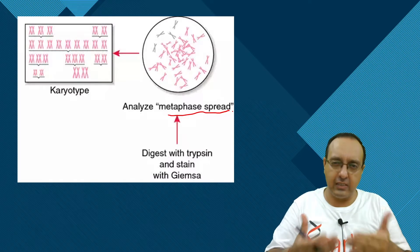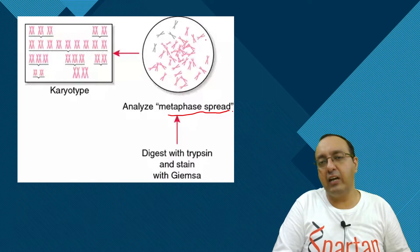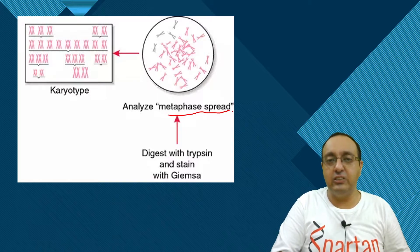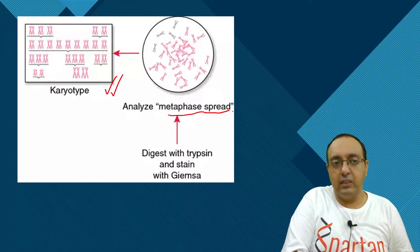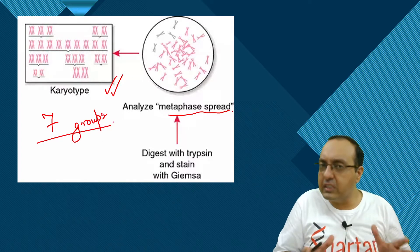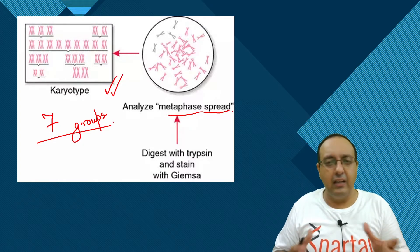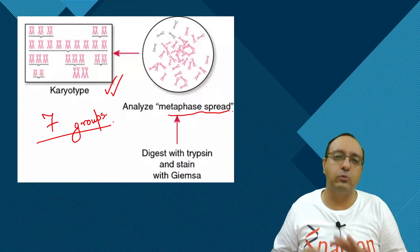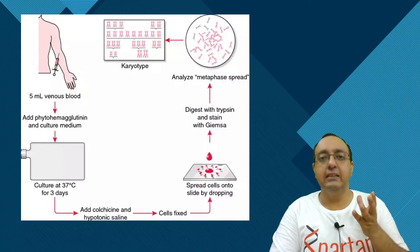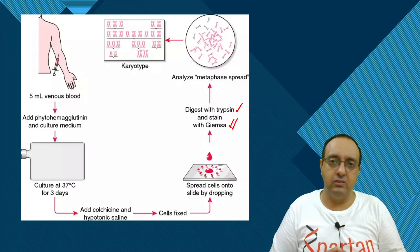We then analyze this metaphase spread. Usually metaphase or pro-metaphase — which is slightly before metaphase — is the stage people want to look at. Previously this was done by manually photographing and cutting up the image; now software can arrange chromosomes into their respective groups. Human chromosomes are organized into seven different groups, mostly by size: chromosome 1 is the largest and chromosome 22 is probably the smallest, with some exceptions such as the X chromosome, which is quite large. We also digest with trypsin and stain with Giemsa in some cases.